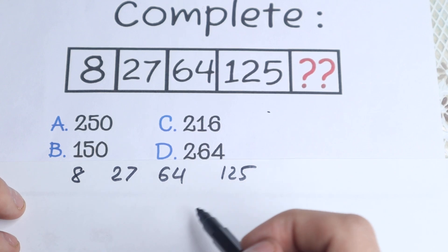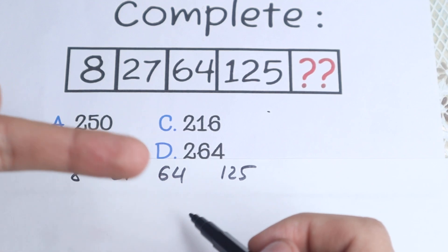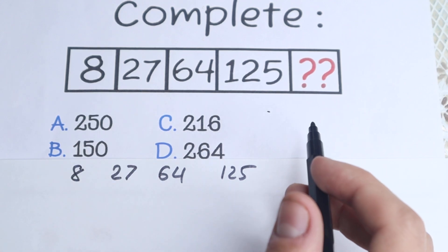So what is the pattern between all of these numbers? On the first side we can see this is even, this is odd, this is even, this is odd number.